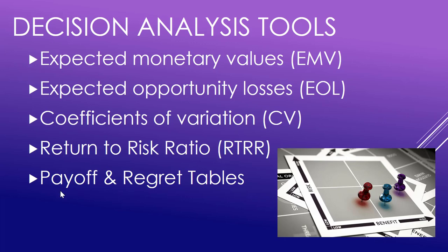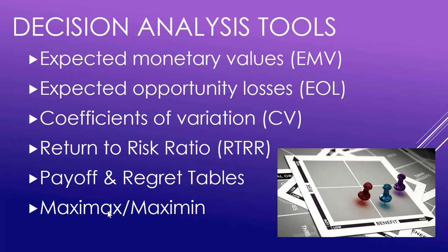We're also going to look at payoff and regret tables — we'll organize all our numbers into these tables and calculate all of these values from them. We'll also get some simple values like the Maxi-Max and the Maxi-Min, which are fairly basic and help us decide what we should do, while the EMV, CV, and others are more complex.